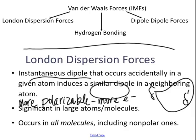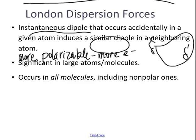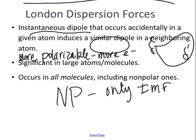London dispersion forces actually occur in all molecules — polar and nonpolar — because all molecules are bumping into each other. However, it is not the primary intermolecular force in polar molecules. I actually prefer you don't mention it for polar molecules, because it's not significant there. It is the only intermolecular force in nonpolar molecules.